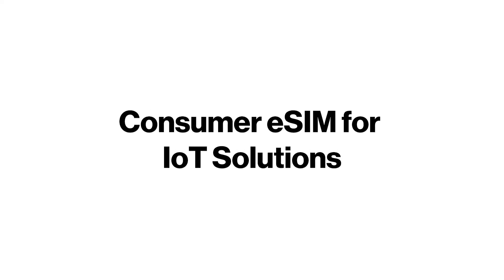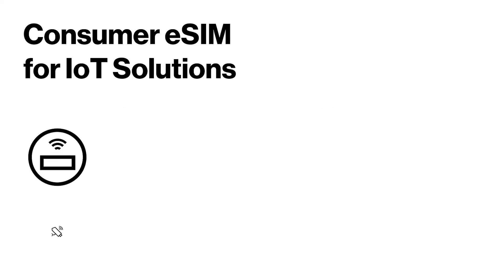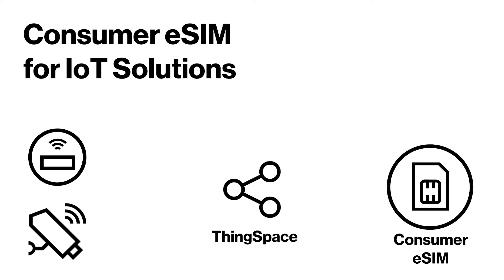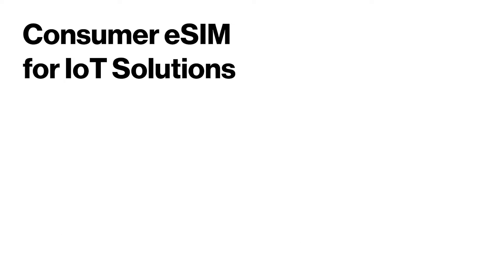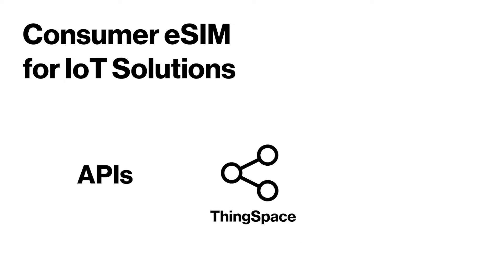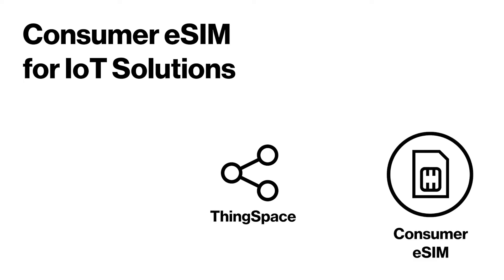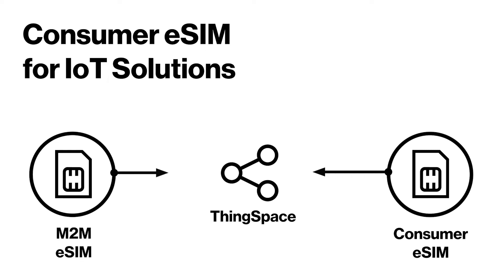Consumer eSIM for IoT solutions enables customers to activate IoT devices using the Consumer eSIM model via our ThingSpace portal. This feature gets implemented via new APIs developed for ThingSpace and exposed to the customer community. It allows customers to manage both their Consumer and M2M model devices through a single pane of glass.